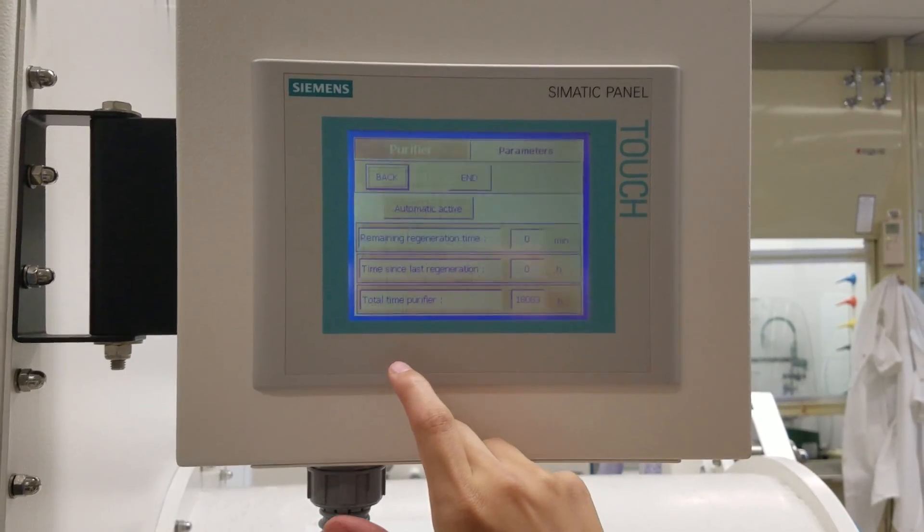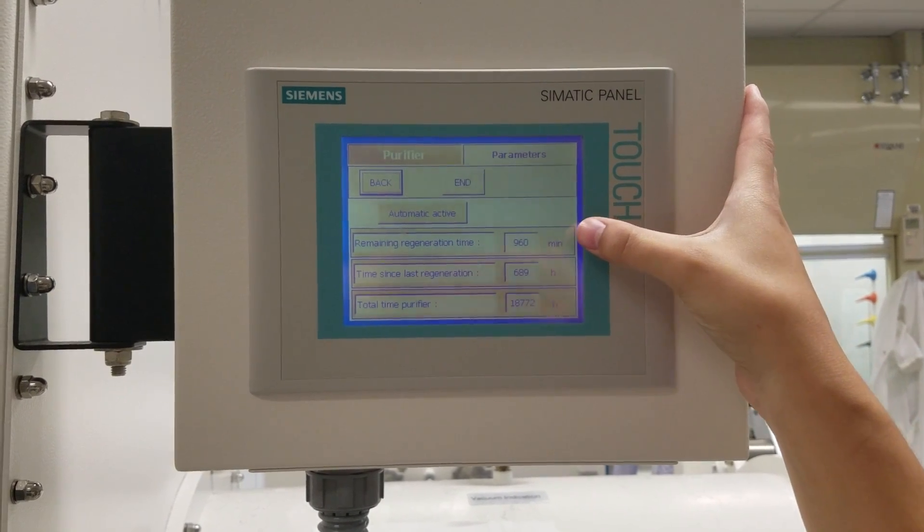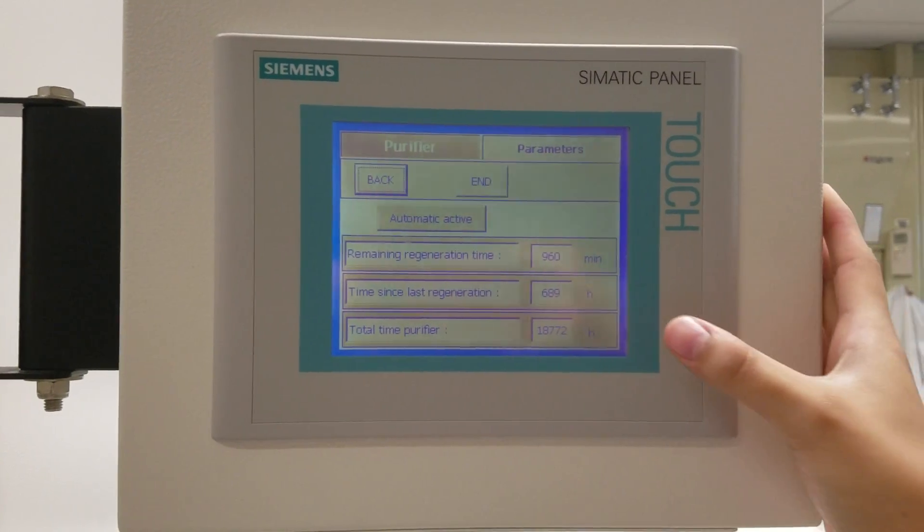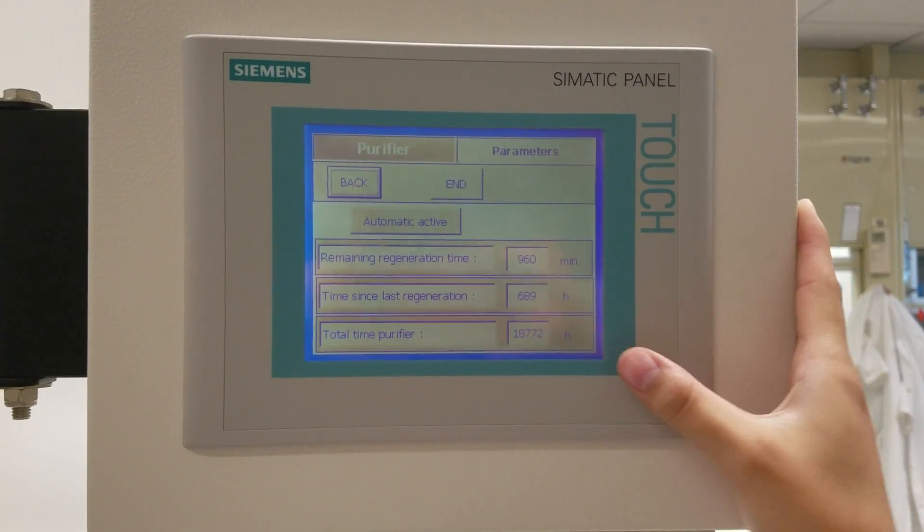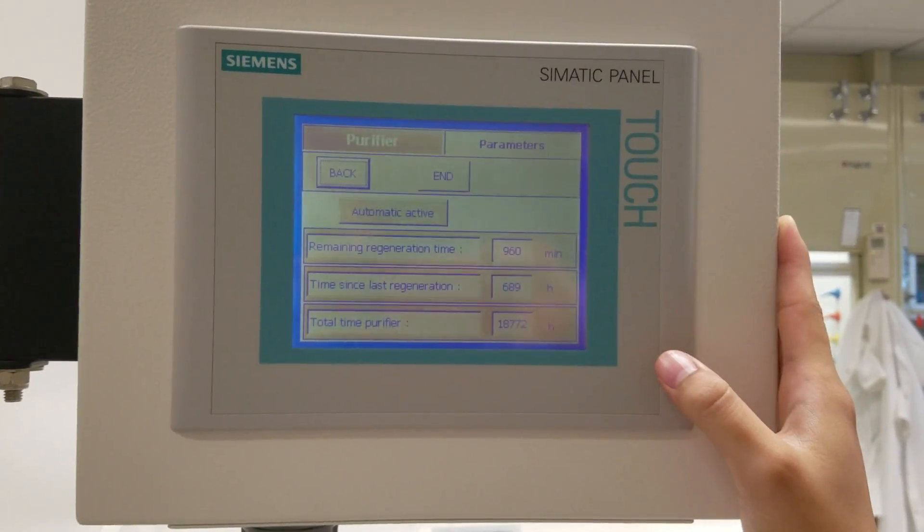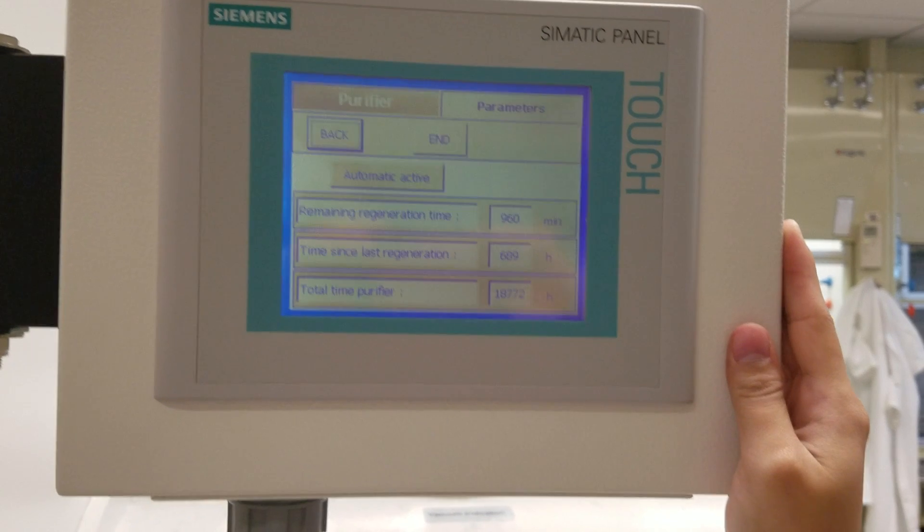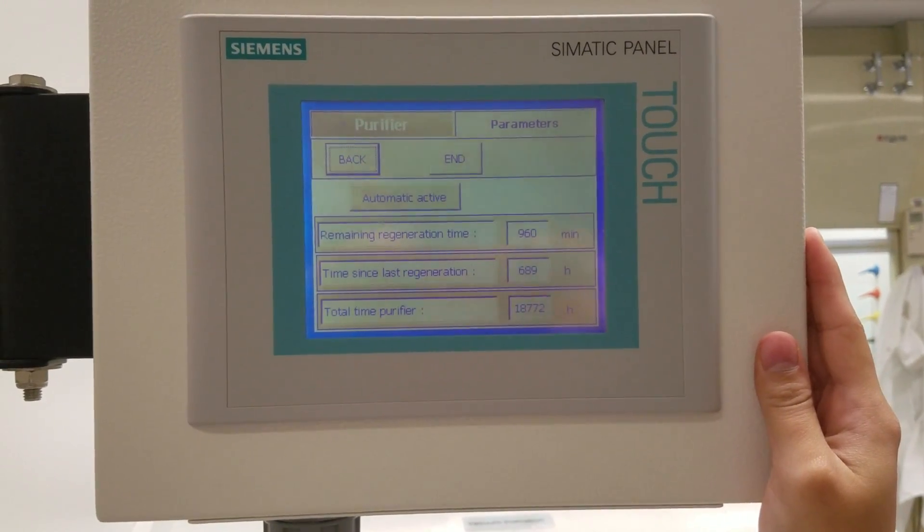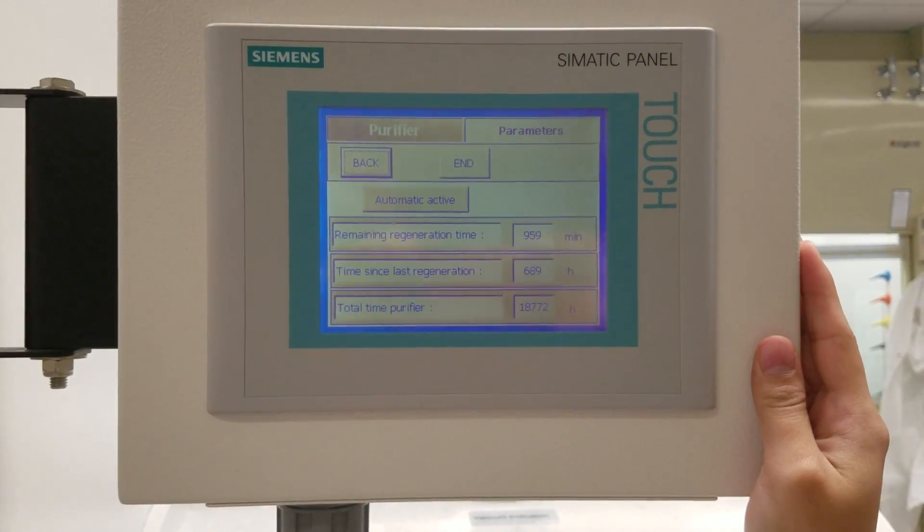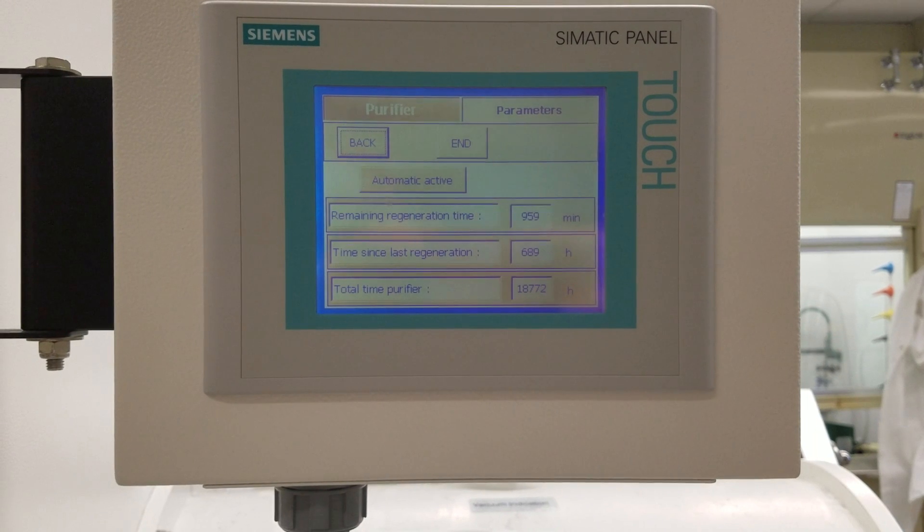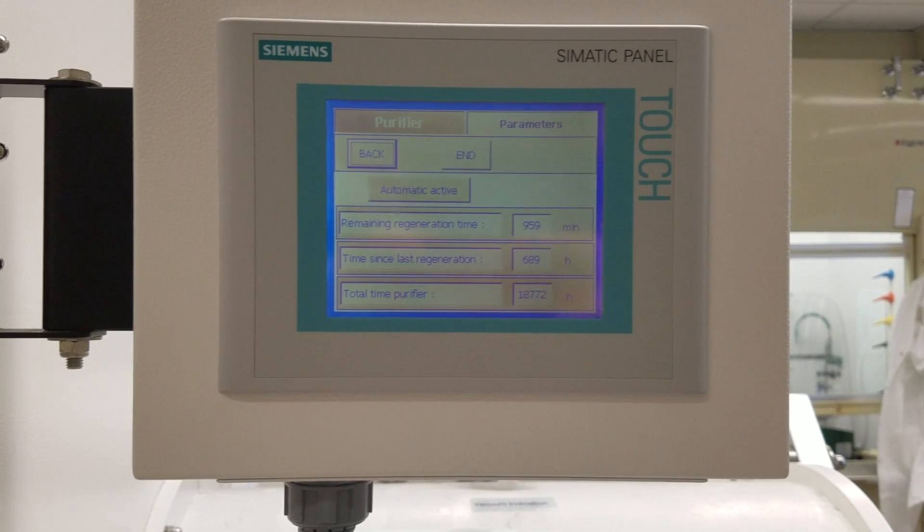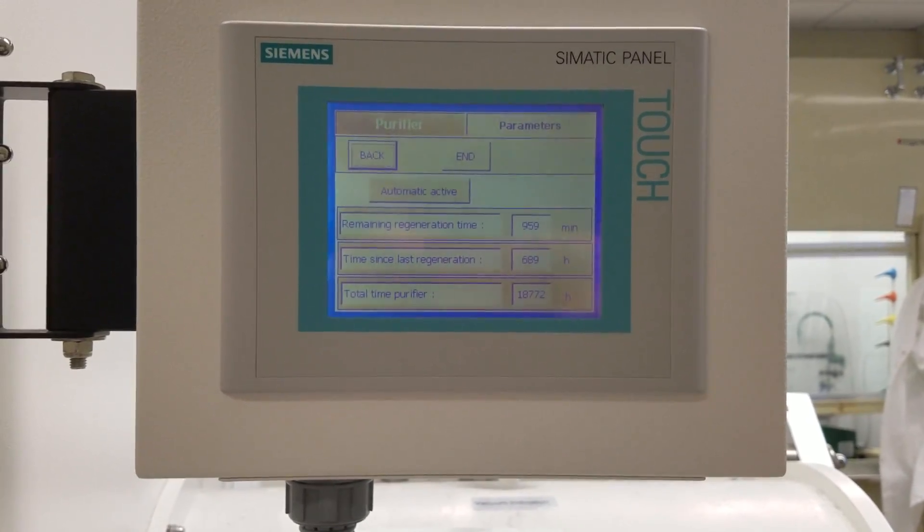If we go to status, we have the regeneration time, which is 960 minutes, which is 16 hours. The last time we did the regeneration, the total time that the purifier has been working. So, at this point, you just want to wait and make sure that the regeneration is going properly. As soon as we see 960 go to 959, we're done. There you go. So, regeneration is starting. Make sure not to touch the gloves in the glove box or disturb the atmosphere at all. The glove box will go back on circulation in 16 hours.